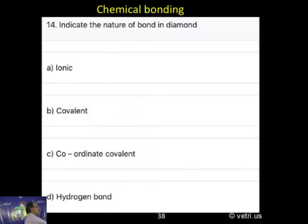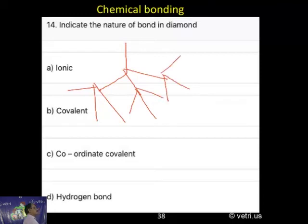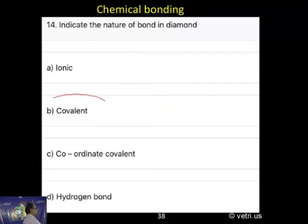So, what will be the nature? Let me draw the structure of the diamond. It will go like this. It is going on extending the tetrahedral. Each carbon will be tetrahedral connected by carbon. It is going on. This is the structure of diamond. So, correct answer is B.